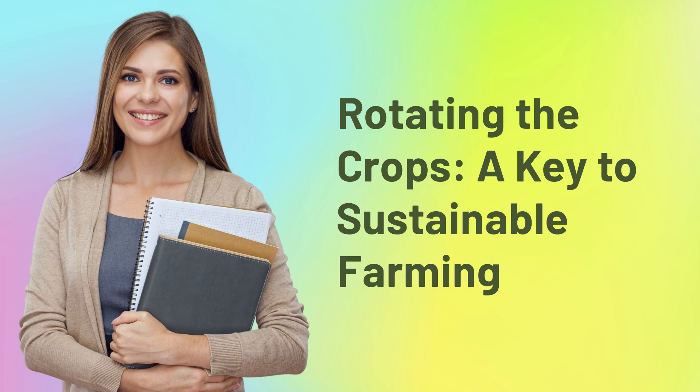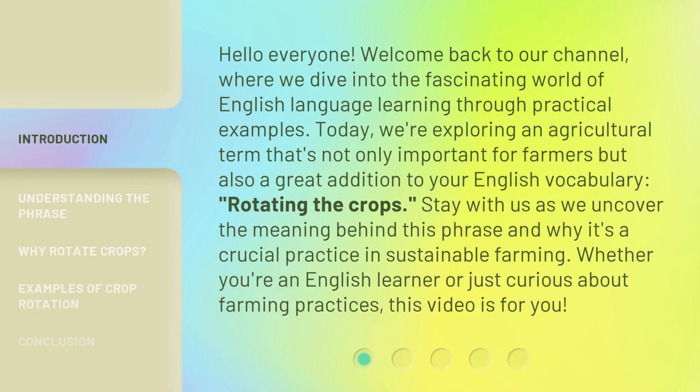Rotating the Crops, a Key to Sustainable Farming. Hello everyone, welcome back to our channel, where we dive into the fascinating world of English language learning through practical examples. Today, we're exploring an agricultural term that's not only important for farmers but also a great addition to your English vocabulary: rotating the crops. Stay with us as we uncover the meaning behind this phrase and why it's a crucial practice in sustainable farming. Whether you're an English learner or just curious about farming practices, this video is for you.